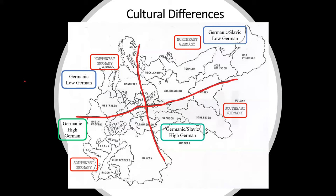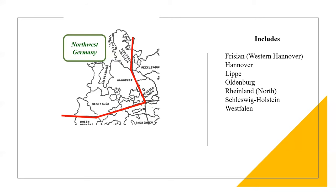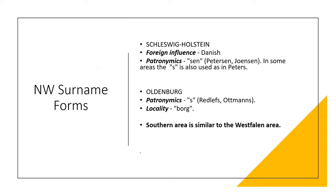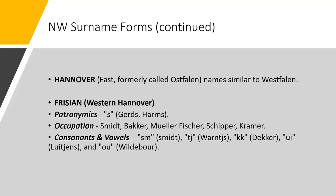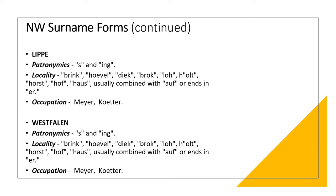The Northwest area includes Sleswig-Holstein, Oldenburg, Hanover, North Rhineland, Frisian, Lippe, and Westphalen. The following are the surname forms for Sleswig-Holstein and Oldenburg, with examples for both. These are the surname forms used for Hanover and Northern Rhineland. The surname forms for Eastern Hanover, formerly called Ostphalen, are similar to Westphalen. Surname forms in Western Hanover include the Frisian area. The last name forms for this area are Lippe and Westphalen.